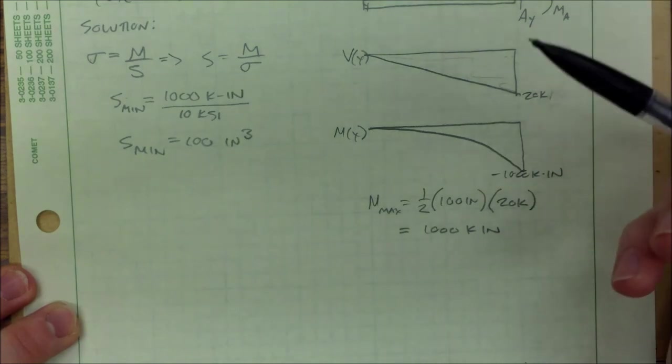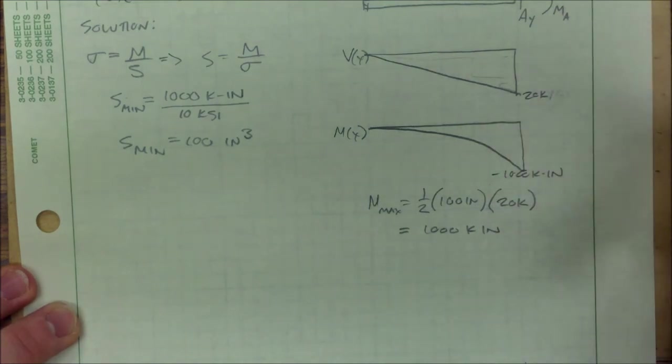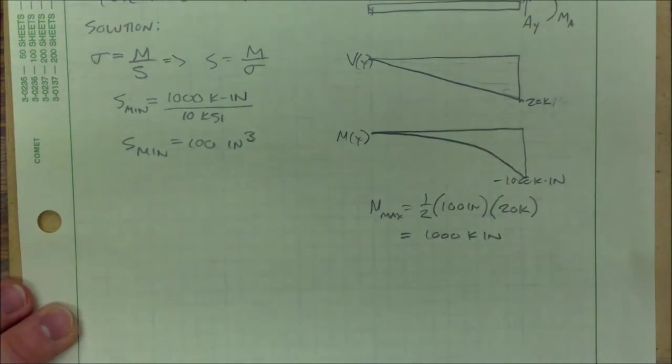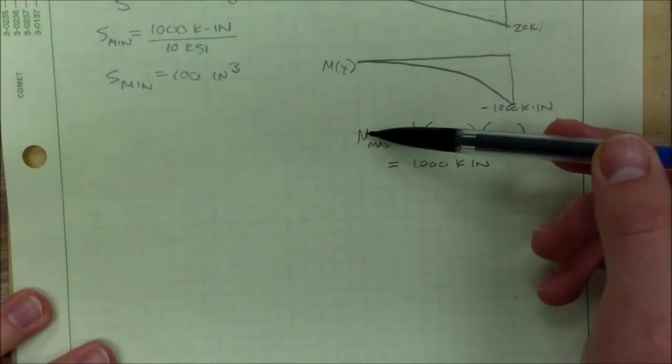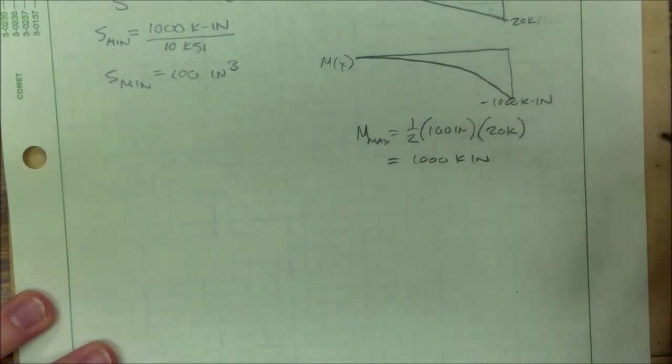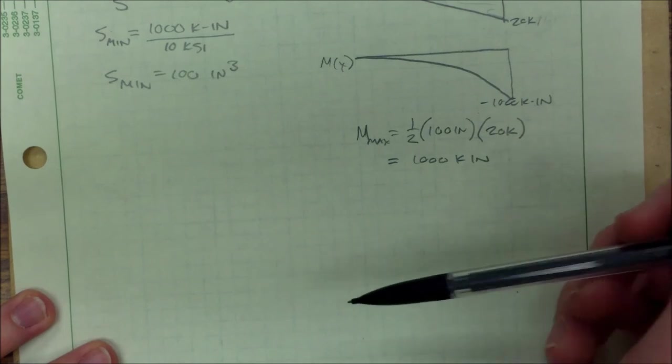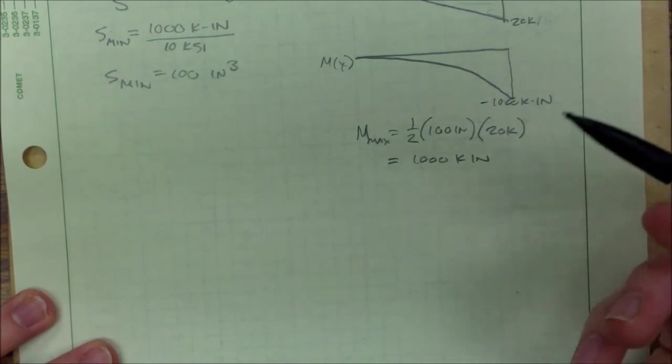Which means I have to go back and do my statics for having an additional weight. So I'm going to be looking for a new maximum moment with a variable w being the distributed weight.